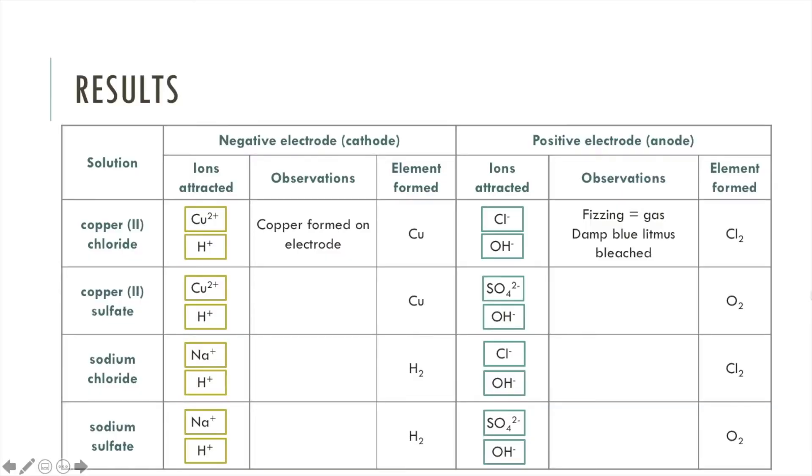So now let's fill in our observations. We have copper forming on the electrode and we also saw fizzing at the positive electrode. This time the damp blue litmus paper didn't change colour so it wasn't chlorine, and actually what we predicted from the previous video was correct. It's oxygen which formed at the positive electrode.